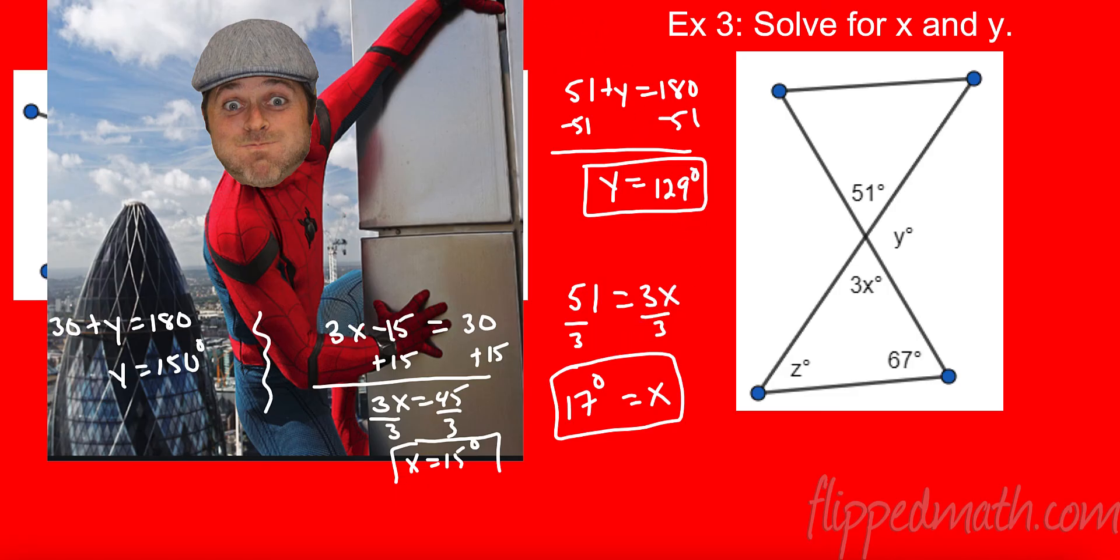All right. So let's label a few things. I know this is 3x or 51 degrees. The reason I say this is now I have three angles and a triangle, right? Well, if you remember, three angles and a triangle form 180 degrees. All right. So now I can add 51 and 67 together. I get 118. Subtract 118, and I get 62 degrees.